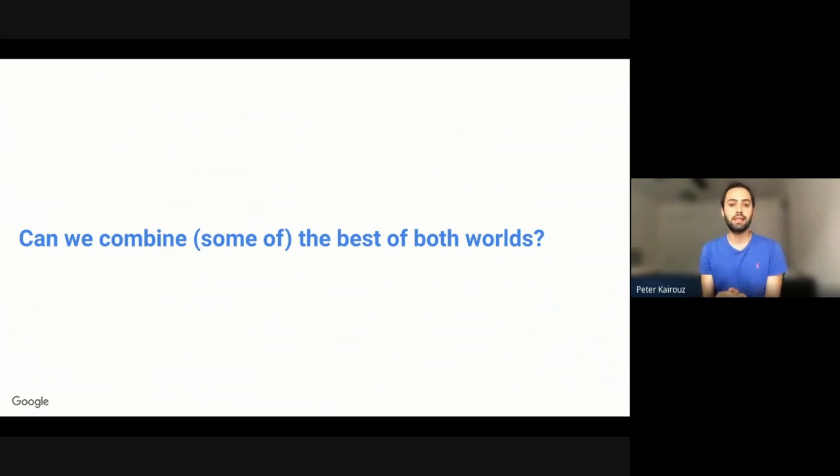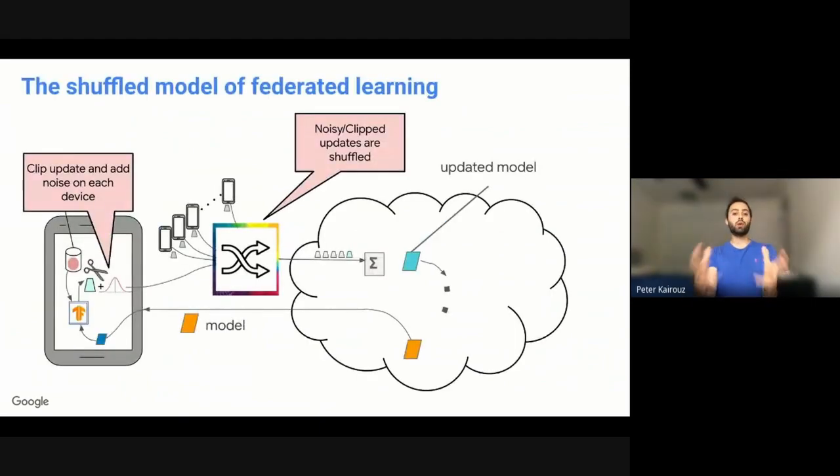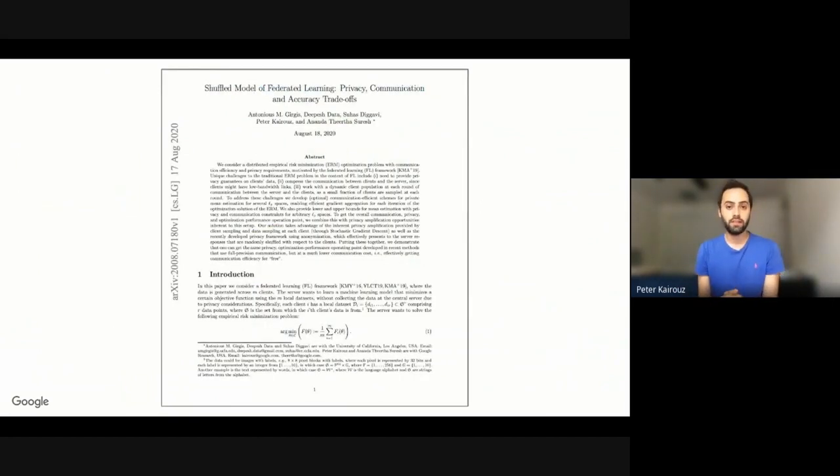And in one of the recent works, we looked at how can we combine the best of both worlds. And this approach requires to anonymize or shuffle the updates that are incoming from users. So we would still clip on device. And now instead of sending the clipped updates directly to the server, we would shuffle them all together. And the server would only see shuffled or anonymized clipped updates. And this model, in some sense, combines the best of both worlds, because you're doing the clipping and noising on device, and then you're shuffling it. It turns out that you can preserve accuracy for federated learning. So you can still train high-quality models. And we show exactly the trade-off between accuracy, privacy, and communication. In a recent work that's on Archive, I encourage you to look at this paper with collaborators from UCLA, where we study the shuffled model of federated learning for the first time.